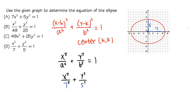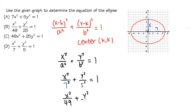Don't forget to square the values out. So all in all, the final equation is x squared over 49, plus y squared over 25, equals 1. And that is the answer.